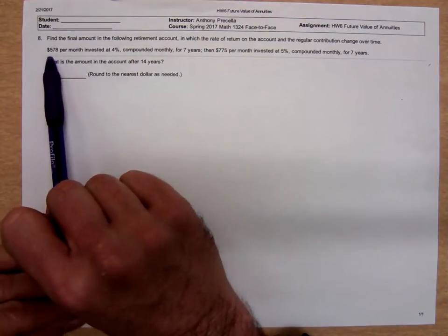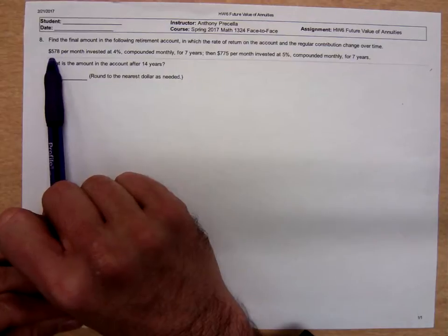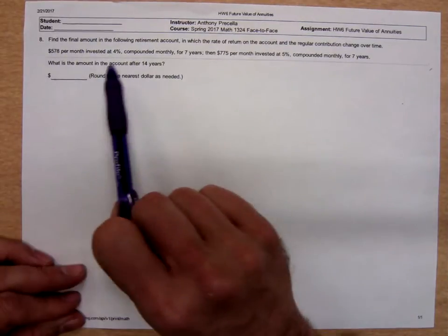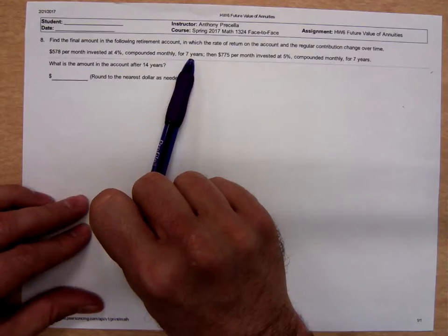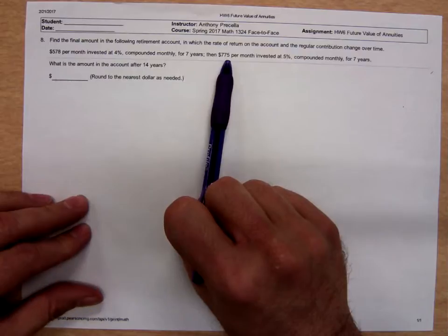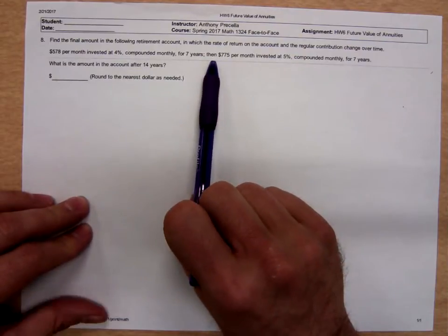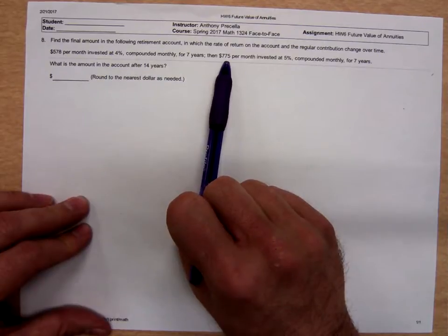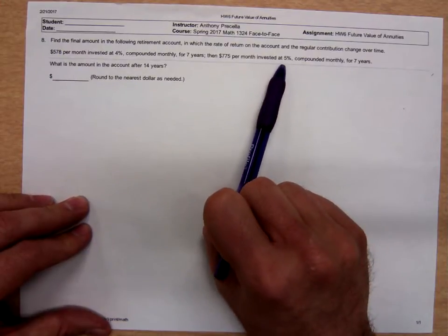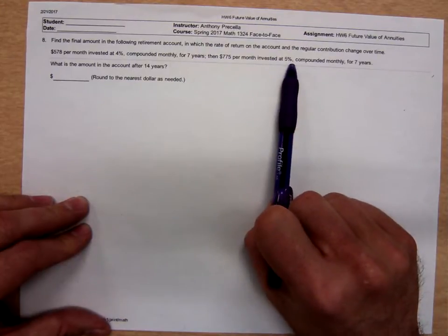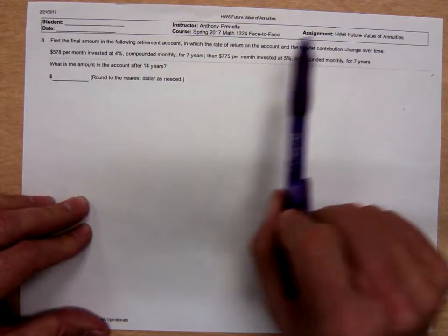Find the final amount in the following retirement account in which the rate of return on the account and the regular contribution change over time. And that's a very sensible thing. It's very unlikely one person's going to deposit $500 a month into an account that pays 5% compounded monthly for 50 years. Usually those amounts deposited change and the interest rates change.